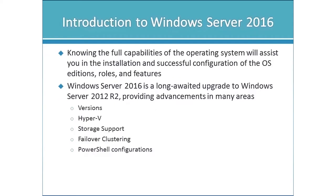Knowing the capabilities of the system is going to help you with the installation, configuration of the OS, choosing the right edition, and choosing the right roles and features. Roles relate to the job that the server is doing within your environment — the particular functionality it provides. Features assist by adding capabilities to individual roles that are already installed.